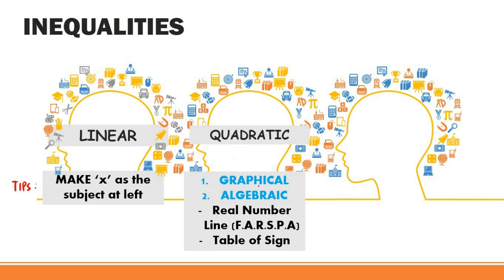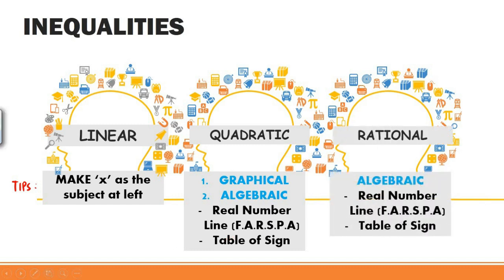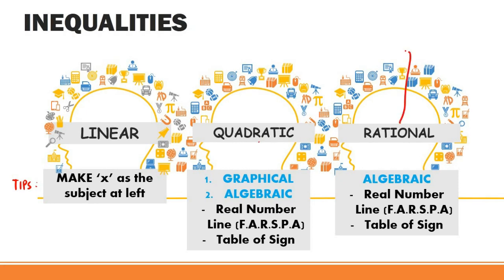For quadratic inequalities, we're going to use two methods: graphical as well as algebraic. For the algebraic method, it's divided into two strategies. The first one is real number line, which we have an acronym for the steps, which is FARSPA, as well as table of signs. Last but not least, we have rational inequality. This rational came from the word ratio, which can be related to fraction.